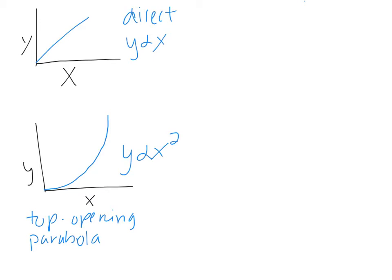I already explained on the previous slide what you would do to linearize this. You would take your x values, square them, leave your y values the same, re-graph. If it is a top opening parabola, you would get a line.